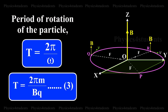Period of rotation of the particle: T is equal to 2 pi by omega. T is equal to 2 pi m by BQ. This is equation number 3.